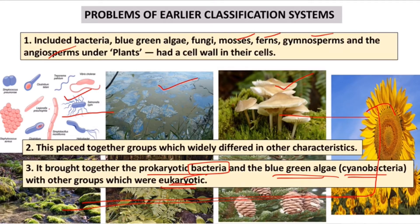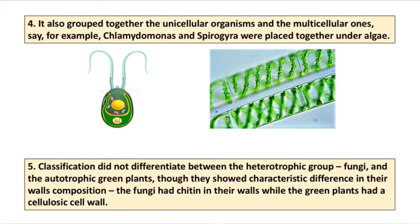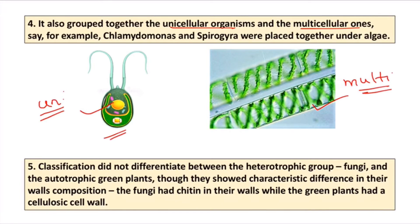So these were three problems. The next problem was that unicellular and multicellular organisms were also put in one group. For example, Chlamydomonas is a unicellular organism, while Spirogyra is a multicellular organism, but both were included in the same group — algae — which was itself included under plants. This was wrong.